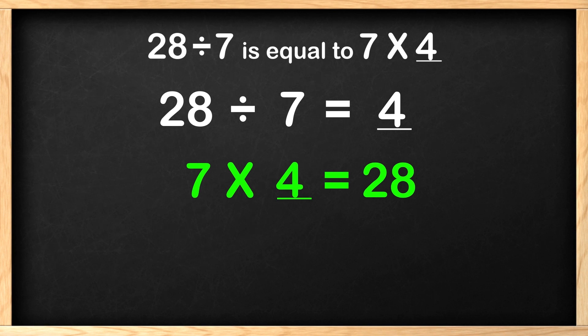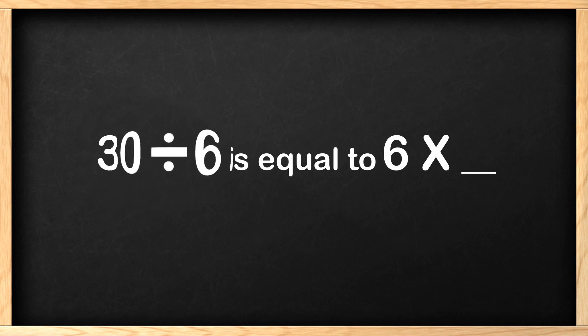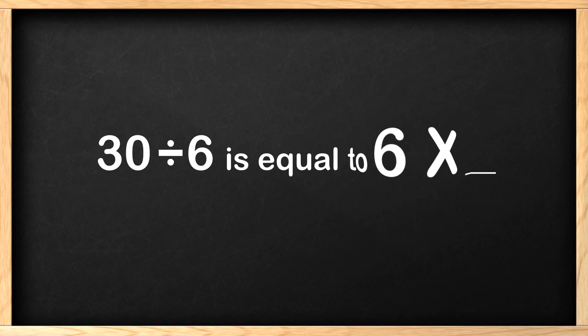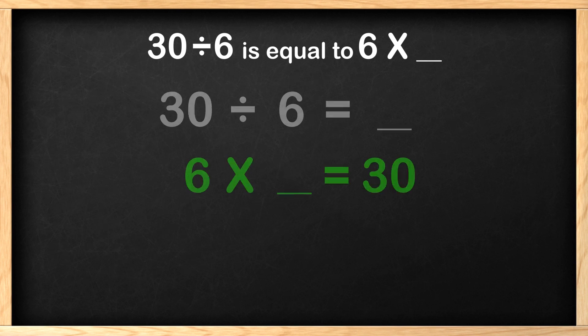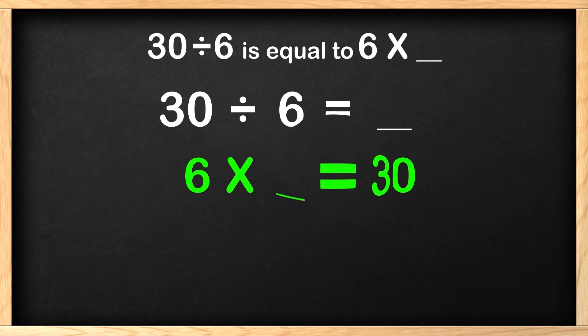I think you are getting the hang of this. Let's do one more problem to find that treasure. The problem says 30 divided by 6 is equal to 6 times blank. To find the answer just like the last one, go ahead and try to write the division and multiplication problem. We have 30 divided by 6 equals blank for our division equation. We have 6 multiplied by blank equals 30. We knew the 30 was the product and 6 was one of the factors.